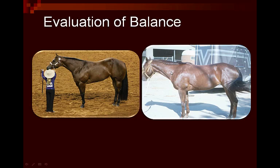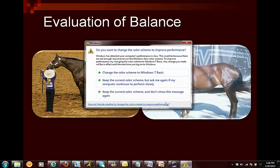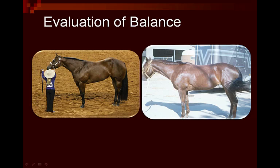Looking at the shortness of back — the relation of the back to the underline — it's easy to see that the sorrel mare is quite a bit longer in her back than she is in her underline. The bay mare, although slightly longer, is relatively closer to being more equal from her back to her underline. Then looking at depth of heart from the withers to the barrel and from the barrel to the ground, both mares are not too bad — nearly equal in that regard.